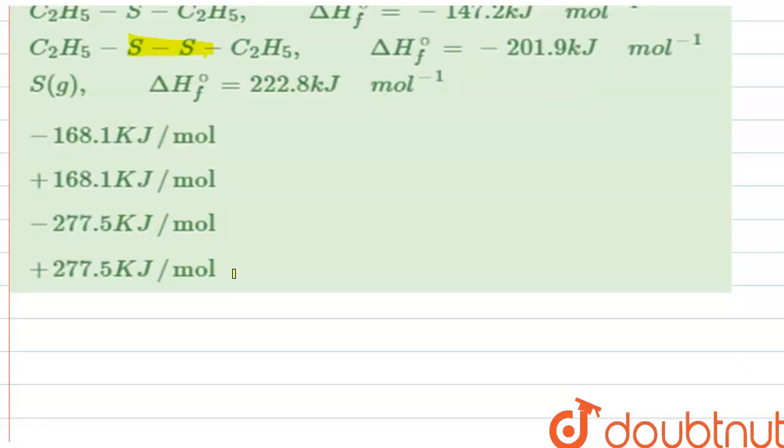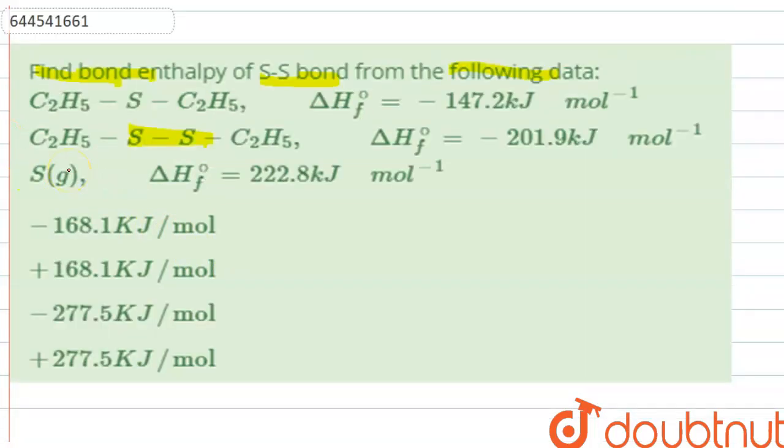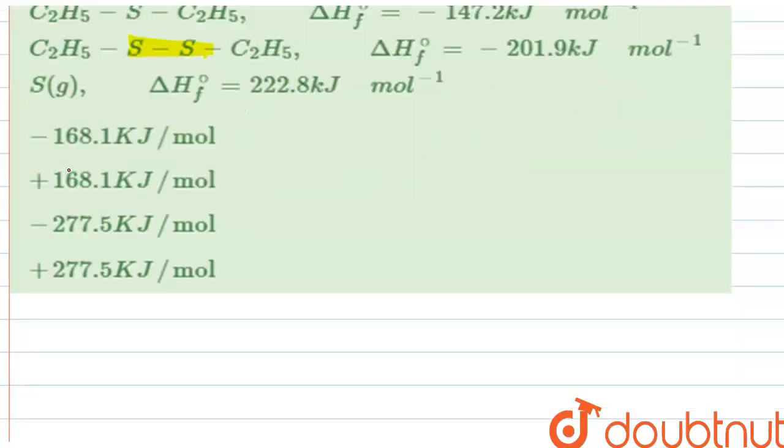From using these data we have to find the bond enthalpy of S-S bond. So if we form a reaction in which the first compound, C2H5-S-C2H5 in gas state, is going to react with sulfur gas, it forms C2H5-S-S-C2H5 gas.